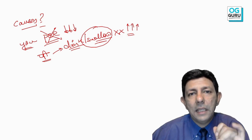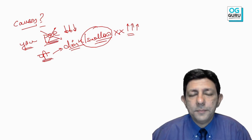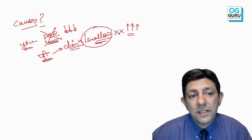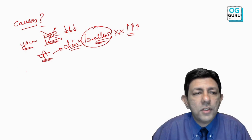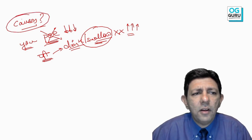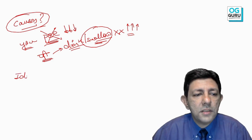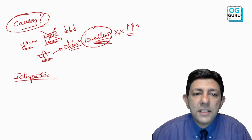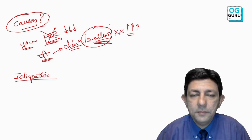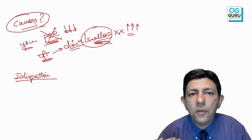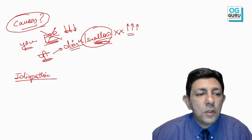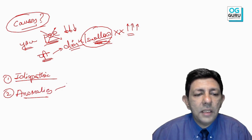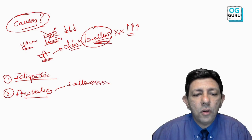The causes of polyhydramnios: remember three main points. First, the most common cause is idiopathic — exact cause not known. Second, swallowing defects — anomalies in the baby where swallowing is not possible, such as esophageal atresia, duodenal atresia, and diaphragmatic hernia. Renal problems cause oligohydramnios, not polyhydramnios, because it is fetal urine that contributes to liquor.